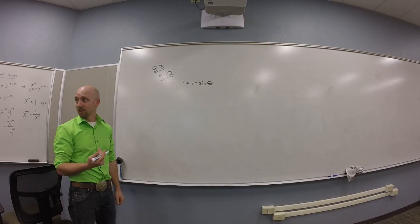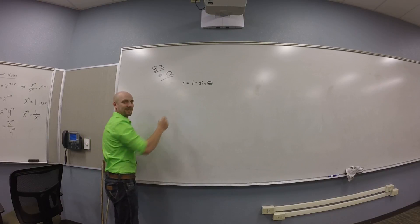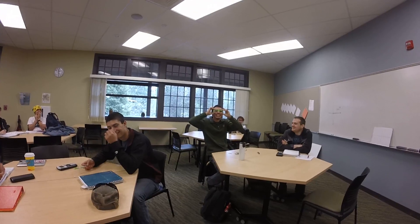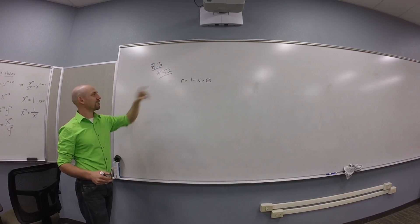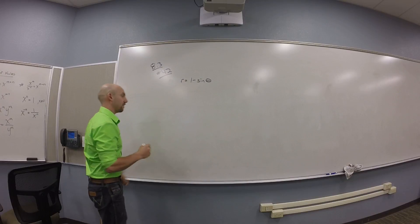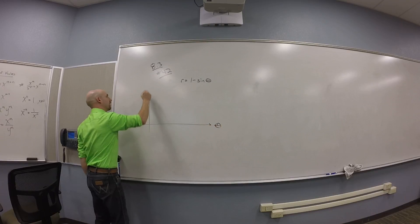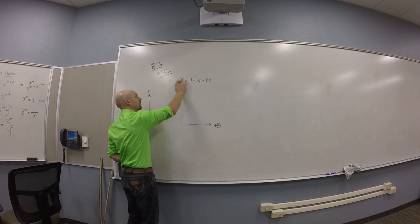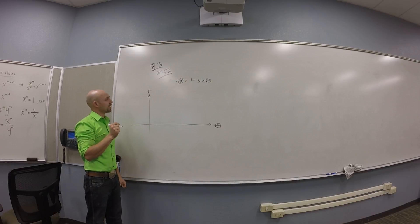I think the first thing I need to do is plot this in the r-theta plane, right? So I'm going to use theta as my input and r as my response, because I think I know how to graph this if I think about r as a function of theta. You guys with me on that? Okay, so what's this look like? What do you guys see in that?